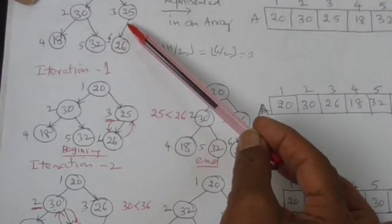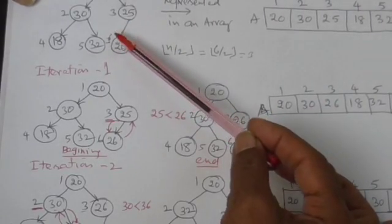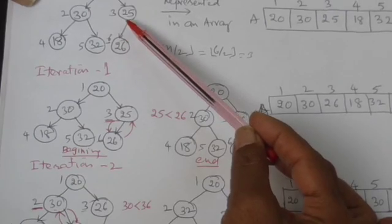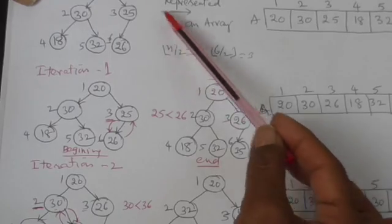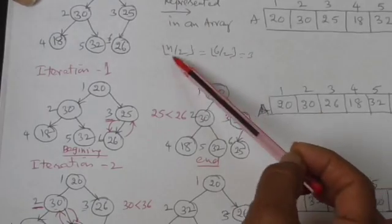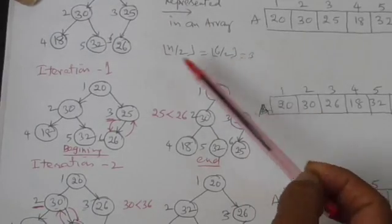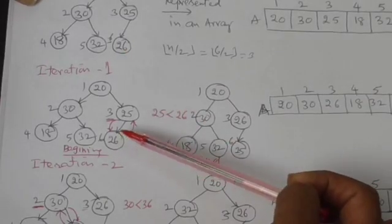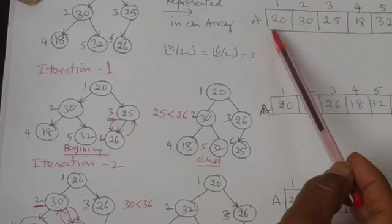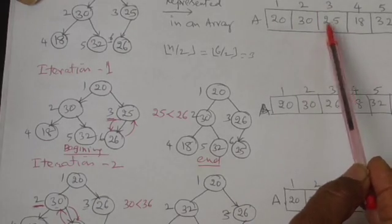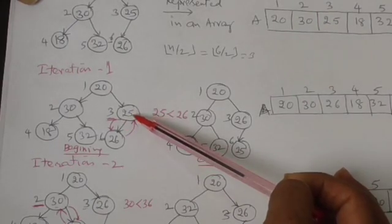We start heapifying the process from the node whose number is n by 2. So here the number of elements are 6. So n by 2 is 3. So I start with a node which is numbered 3. You see it is in the array, this third position, the subscript 3.